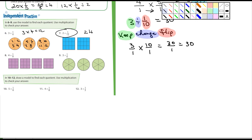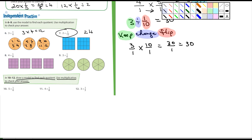For ten through twelve, it says to draw a model — you don't need to. I'm not even worried about using multiplication to check; just solve these. Number eleven: what's four times eight? Four times eight is thirty-two.